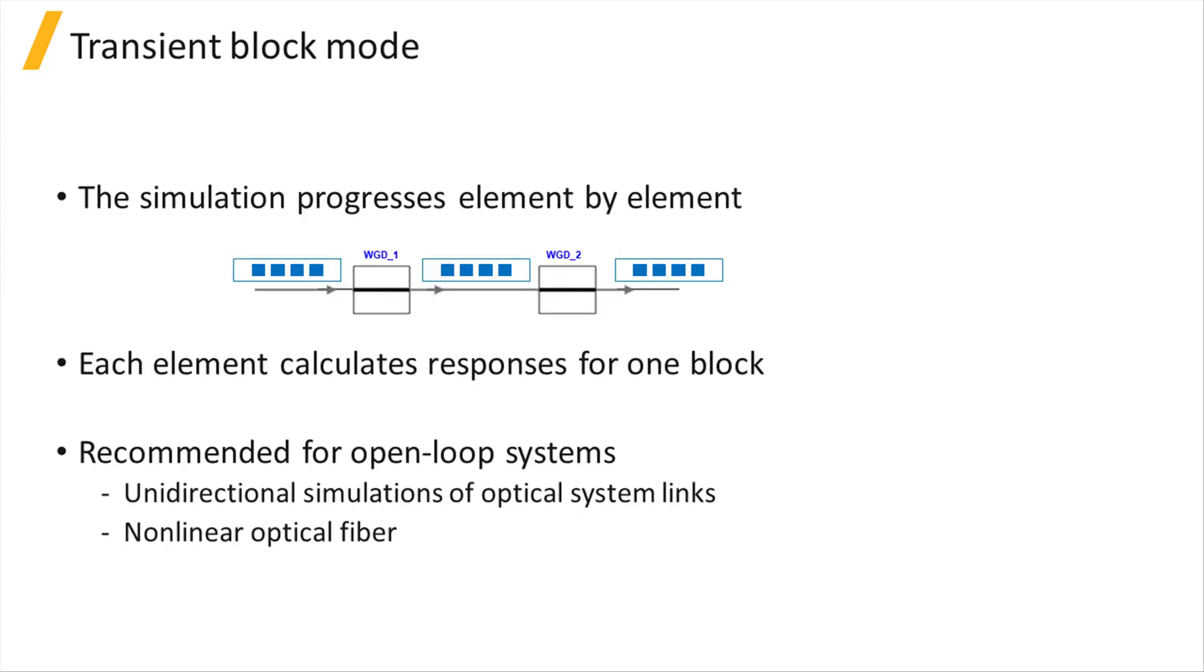In the transient block mode, a waveform from each input port of an element is mapped to a waveform at its output ports, where a waveform is defined as a block of n samples. The simulation progresses element by element. Using the default settings, each element calculates only one block, meaning each element only runs once.